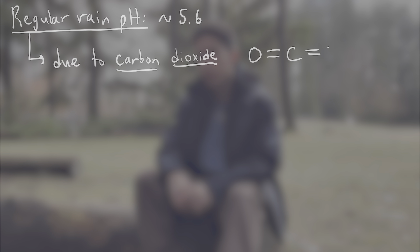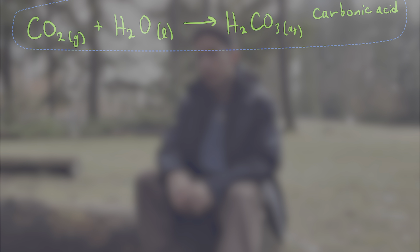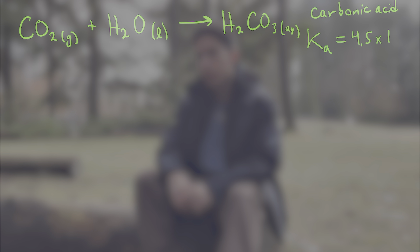It's important we understand acid rain not just on a conceptual level, but in terms of magnitudes as well. Regular rain is already a bit acidic, with a pH of about 5.6 on average. This is because another acid anhydride, carbon dioxide, mixes with it in the atmosphere. CO2 forms carbonic acid when mixed with water — the same process that makes soft drinks fizzy. However, carbonic acid is a pretty weak acid. It has a Ka, or acid dissociation constant, of about 4.5 times 10 to the minus 7.